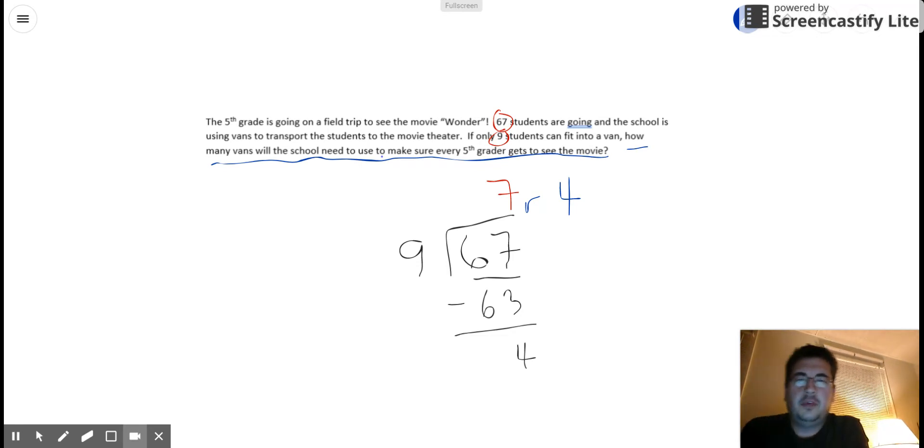Well, if I look at 7 remainder 4, it provides a hint or a clue of how many vans we're going to need, but the answer itself doesn't really tell us how many vans we need. Because I'm not going to say I need 7 remainder 4 vans. Because I'm not really sure what that means. I don't know what a remainder 4 van or vans really means.